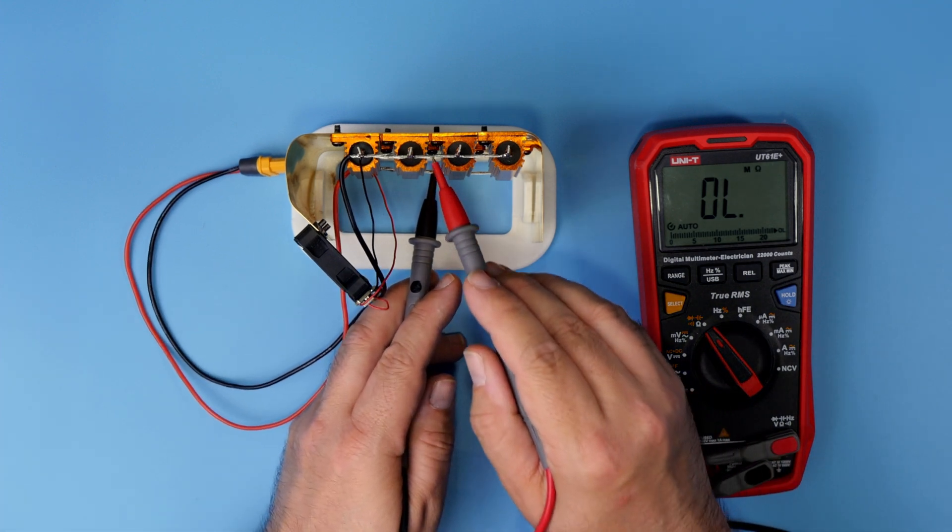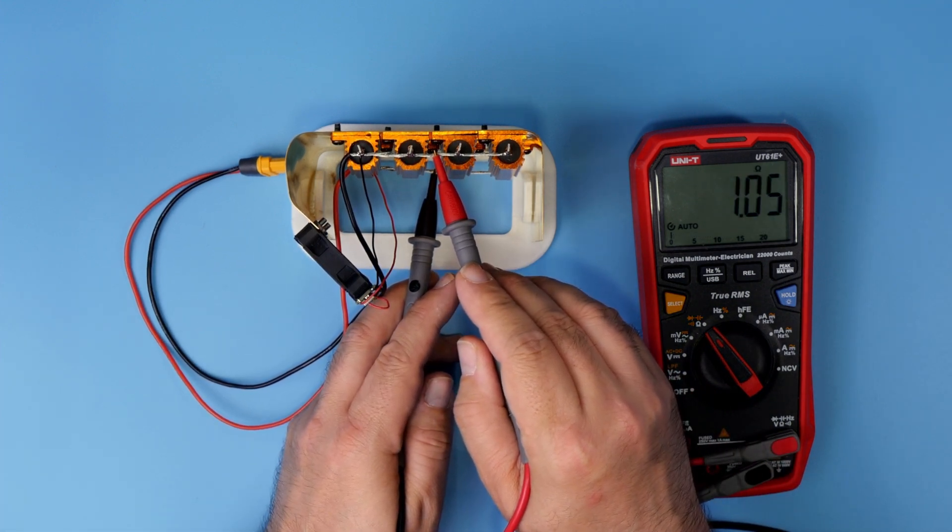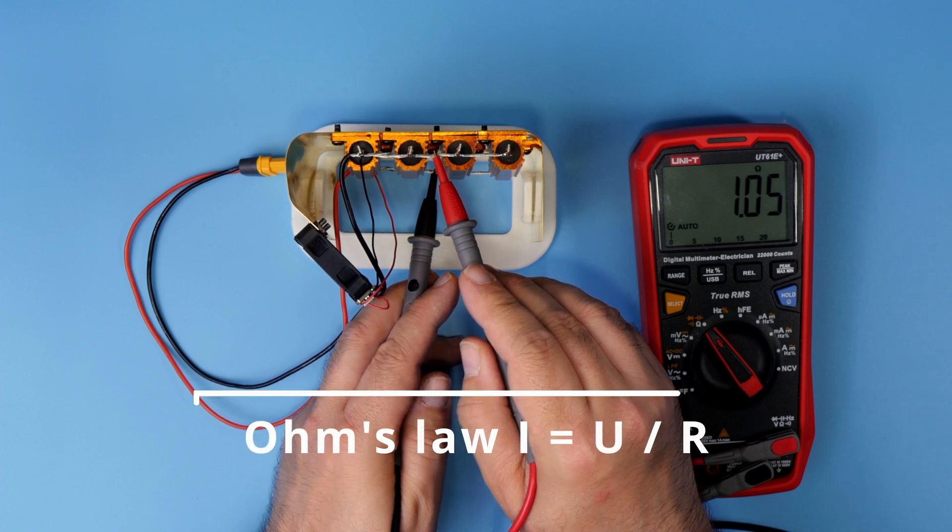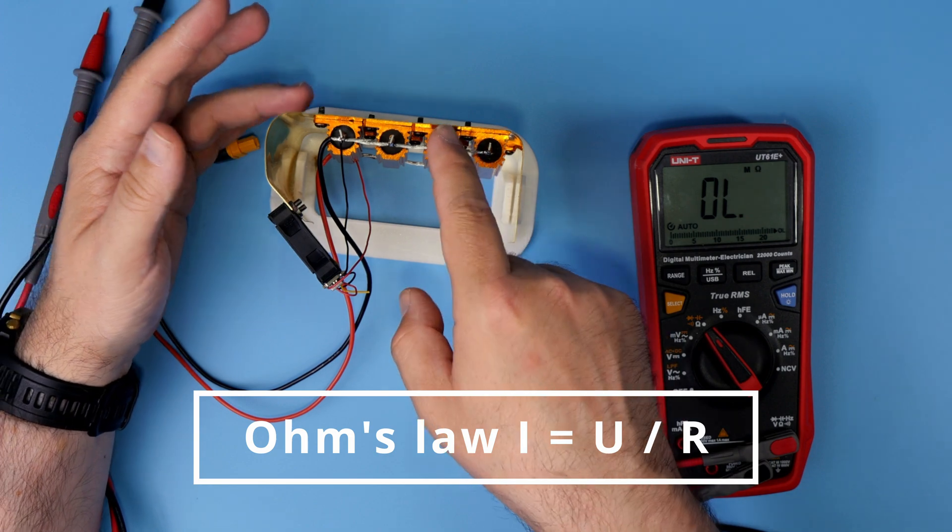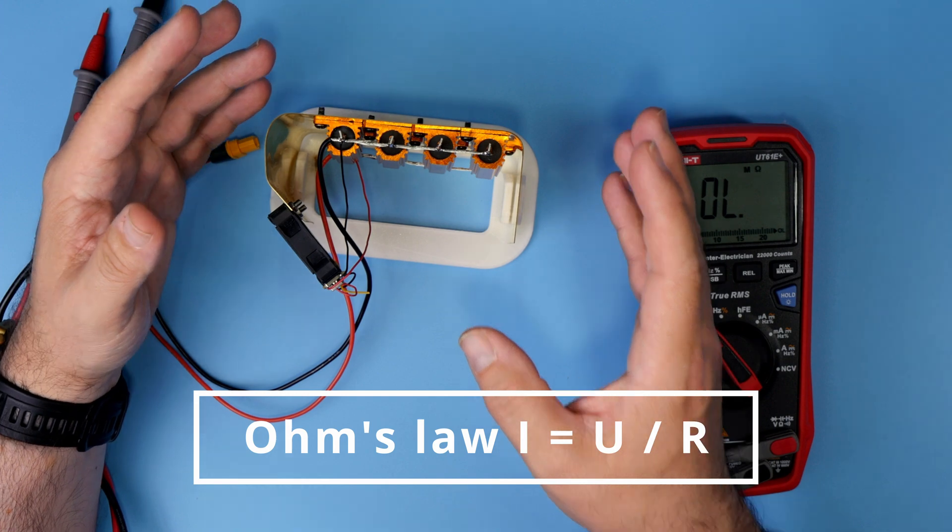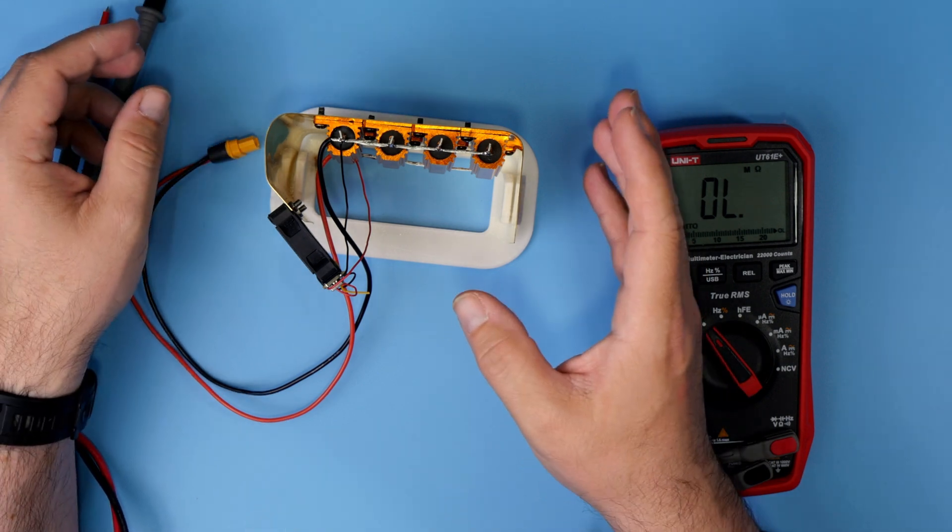Like I said, it's around 1 ohm, because when measured, the multimeter shows around 1.05 ohms. That means for each volt applied to those four resistors, it will pull approximately 1 amp from the source.